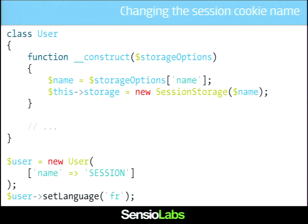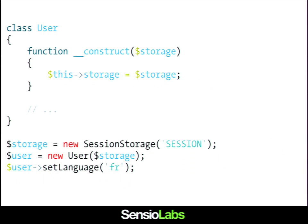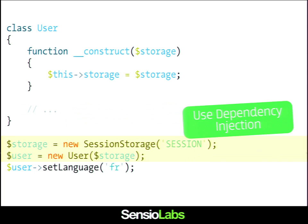Instead of passing all the arguments one after the other, you can also create an array. This array is about all the options you can pass to the session storage. It's a bit better because there is only one argument used to pass the session storage constructor arguments. But still, the user class should not be aware of how you want to configure the session storage. I want the objects to be decoupled. To fix all those problems, you can just use dependency injection: create the session storage object first, configure it any way you want, and then inject it into the user class.